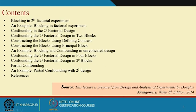The contents of today's presentation: blocking in 2^k factorial experiments, discussed with an example; confounding in 2^k factorial design; confounding in 2 blocks; constructing blocks using defining contrast; constructing blocks using principal block concepts; blocking and confounding in unreplicated design; confounding in 4 blocks; confounding in 2^p blocks; partial confounding; and an example with partial confounding using a 2^3 design.